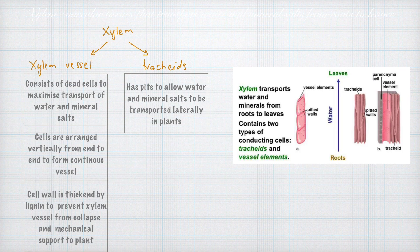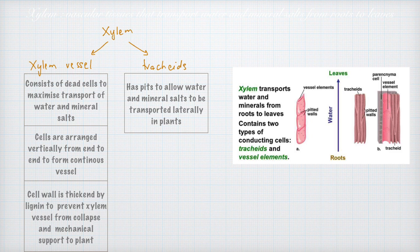Let us look at xylem tissue. Look at the notes on the right side of the slide. The function of xylem is to transport water and mineral salts from roots to leaves — meaning it is only one way. Xylem tissue consists of two conducting cells: xylem vessel and tracheids. Xylem vessel consists of dead cells to maximize transport of water and mineral salts. The cells are arranged vertically from end to end to form a continuous vessel, like a continuous hollow tube.